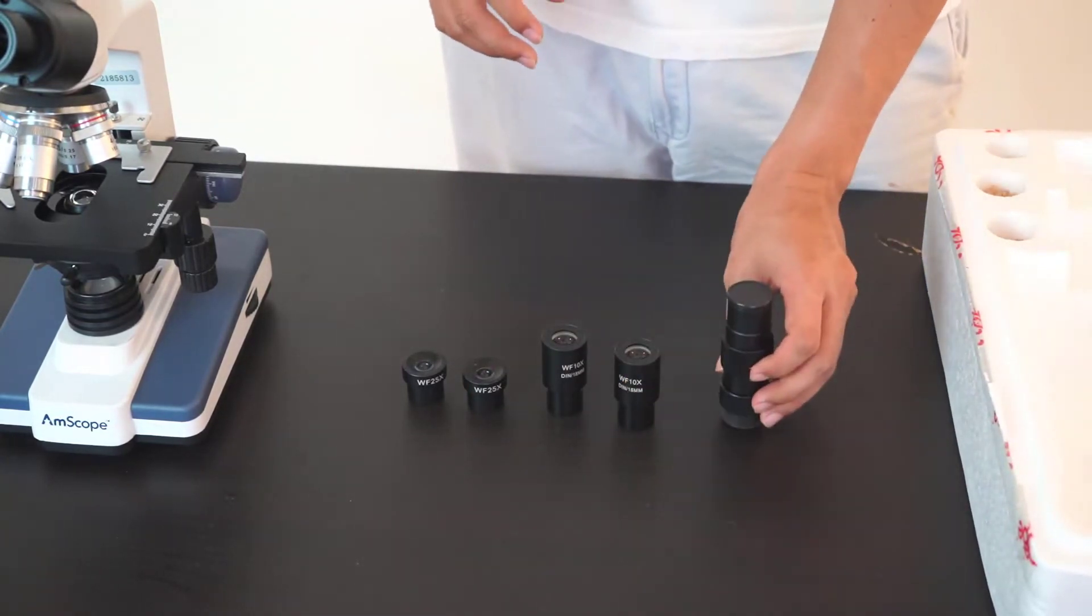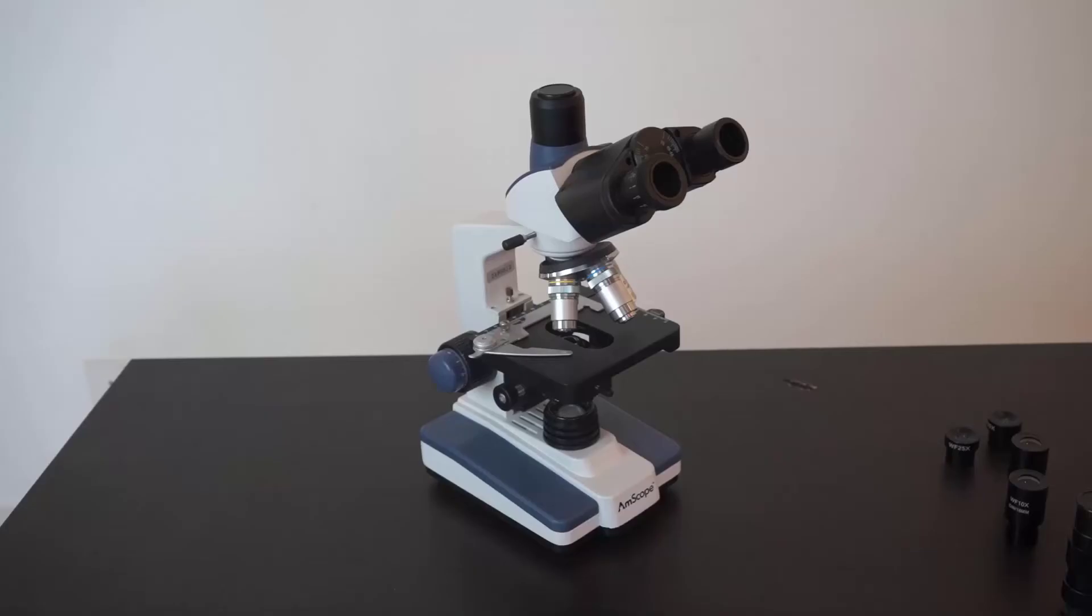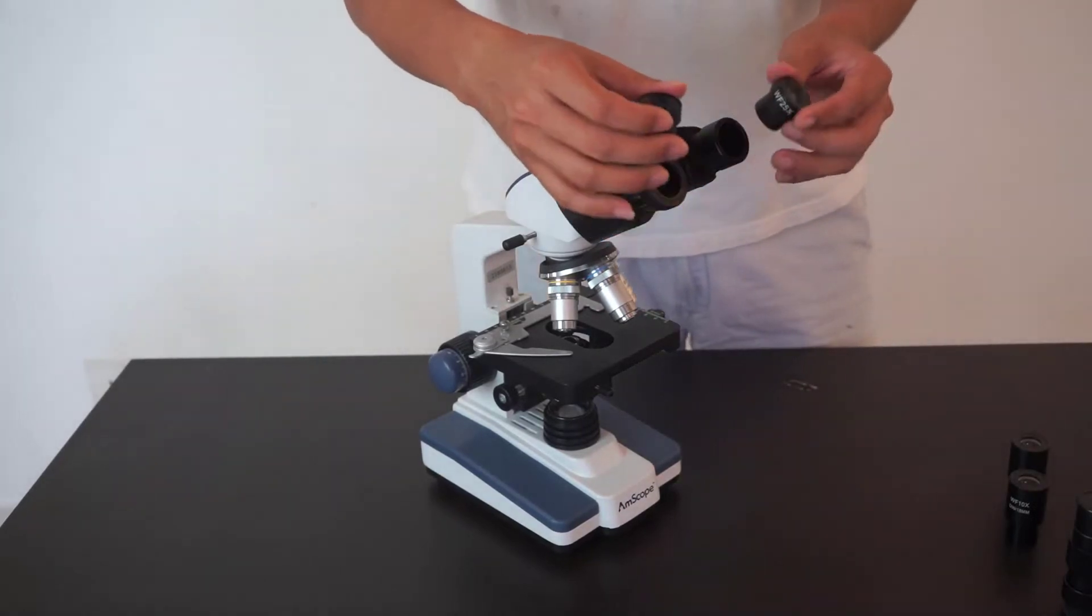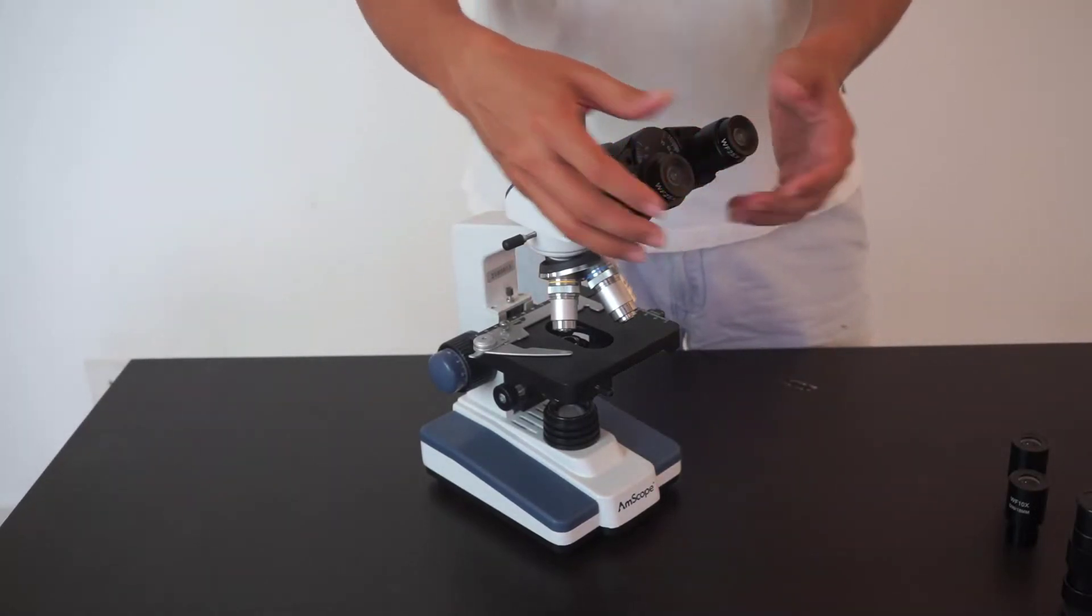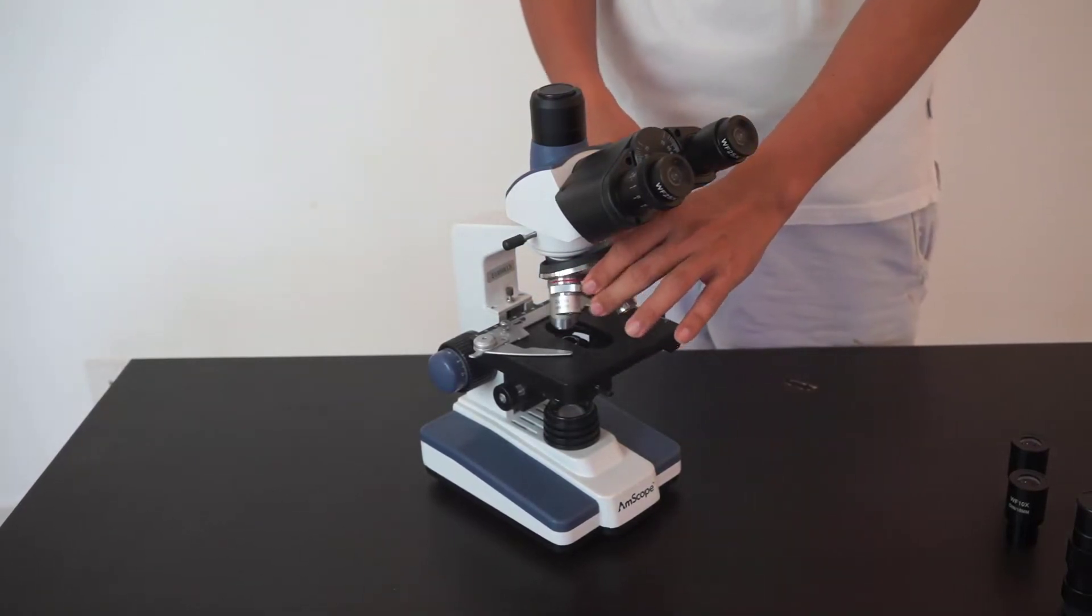There's a trinocular port and dust cover. To use the microscope, we will first need to insert the eyepiece into the microscope. To get the magnification that we want, we just turn the turret of the microscope.